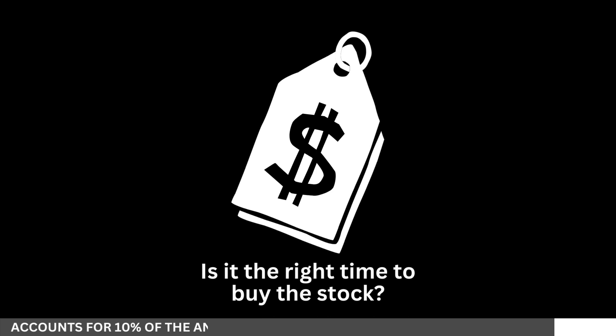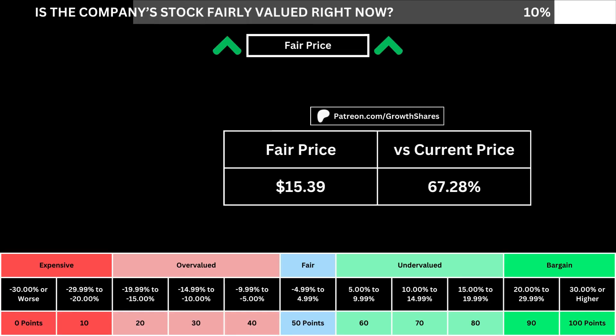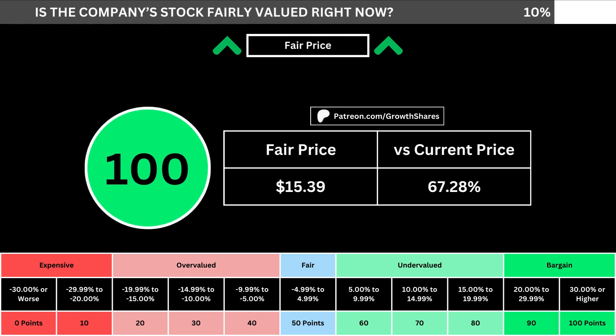But of course, we can't forget about the fair price and whether it's the right time to buy the stock. I use a discounted cash flow model taking into account a 10% margin of safety. That translates into the company's fair price and how many percentage points above or below its current price the stock is. When we compare those numbers with the table below, we can see where the company's stock lies in its intrinsic value spectrum right now.